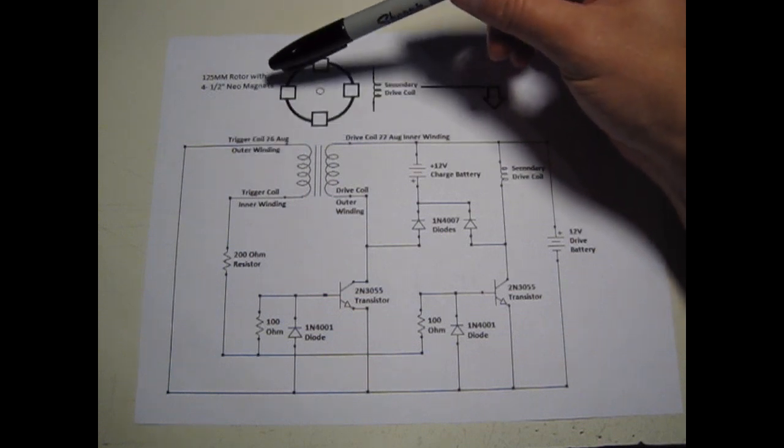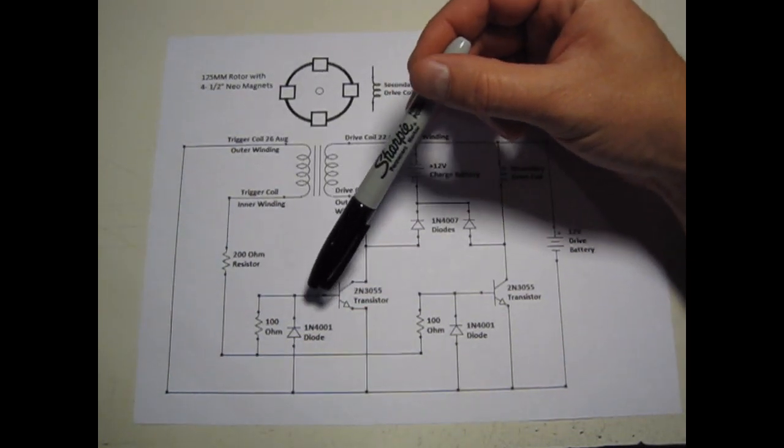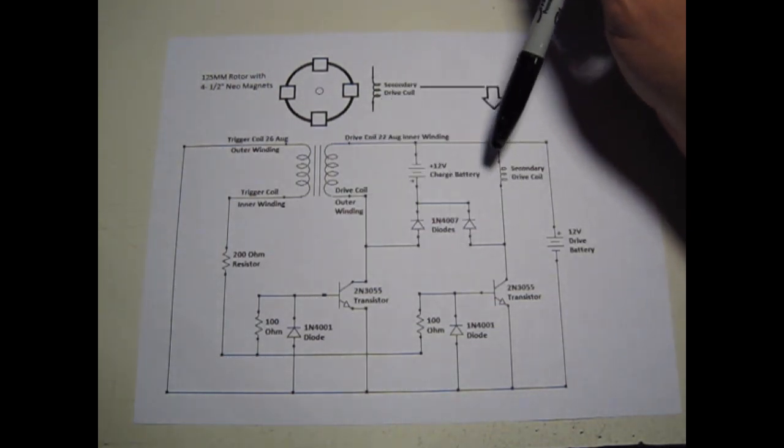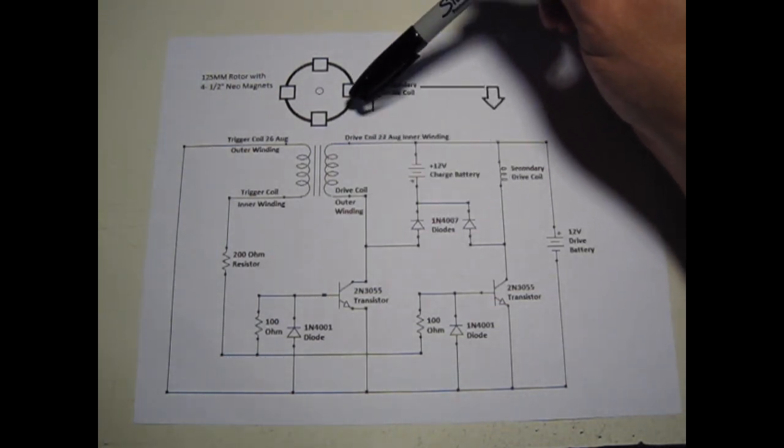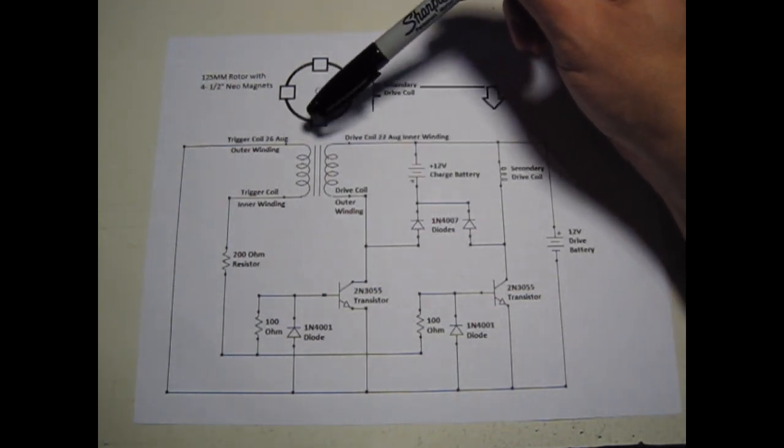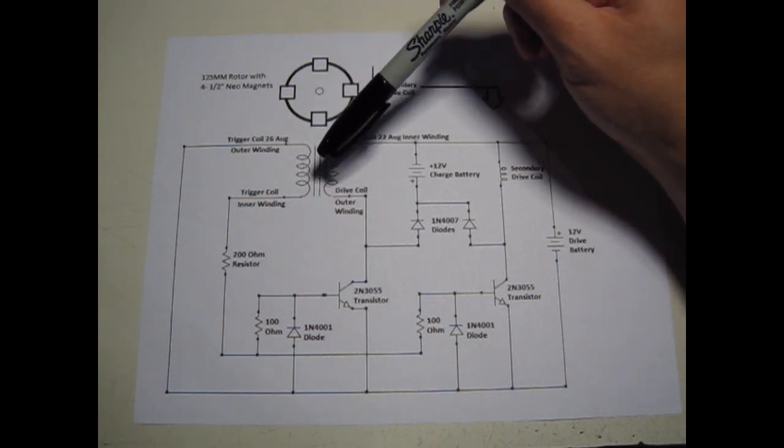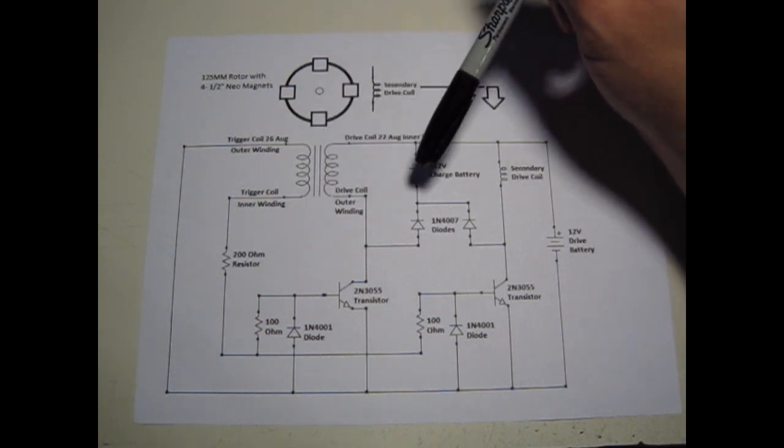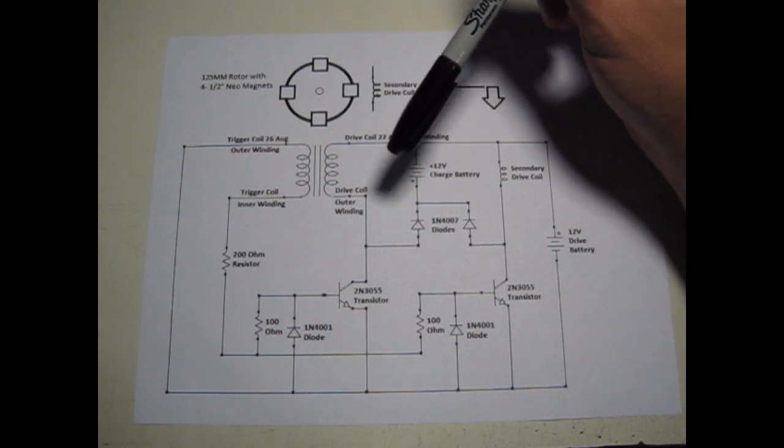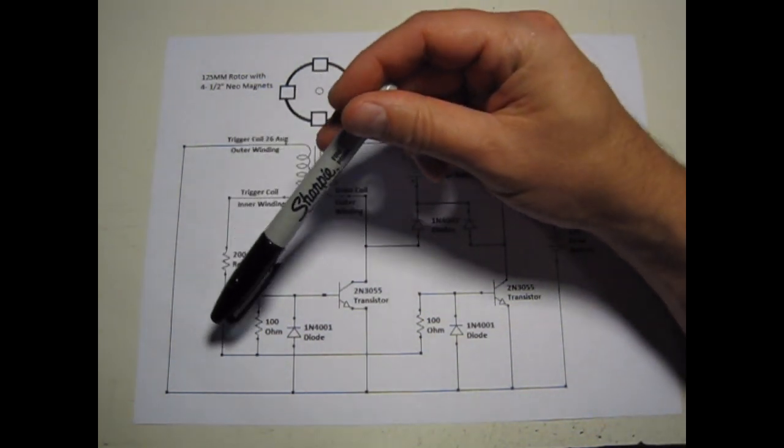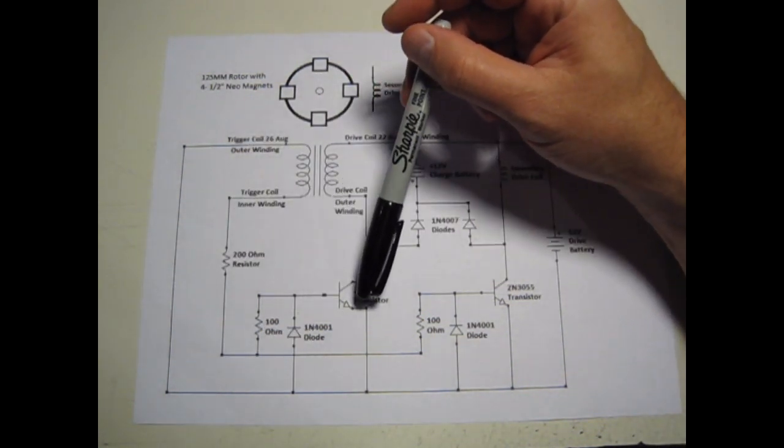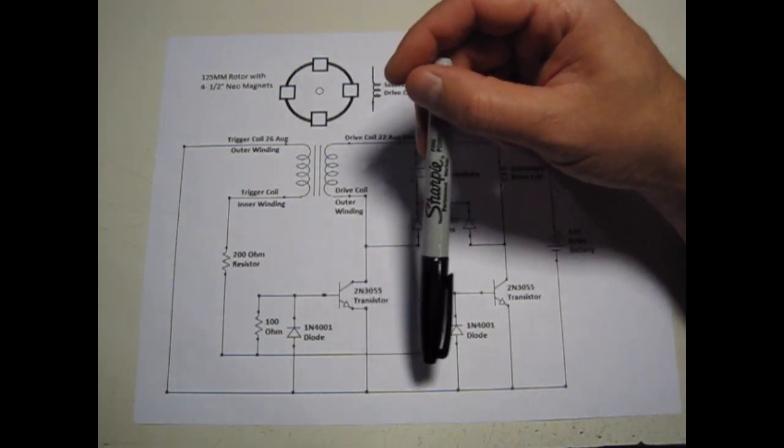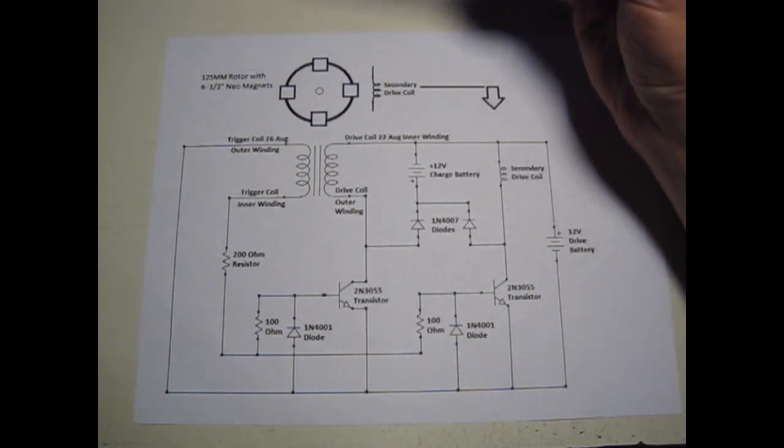As the magnet leaves, this goes back to zero, becomes an open again, and the charging circuit takes over. As the next magnet comes in, it uses that back EMF to charge the battery until the trigger coil develops enough voltage to switch on again and repel the magnet.